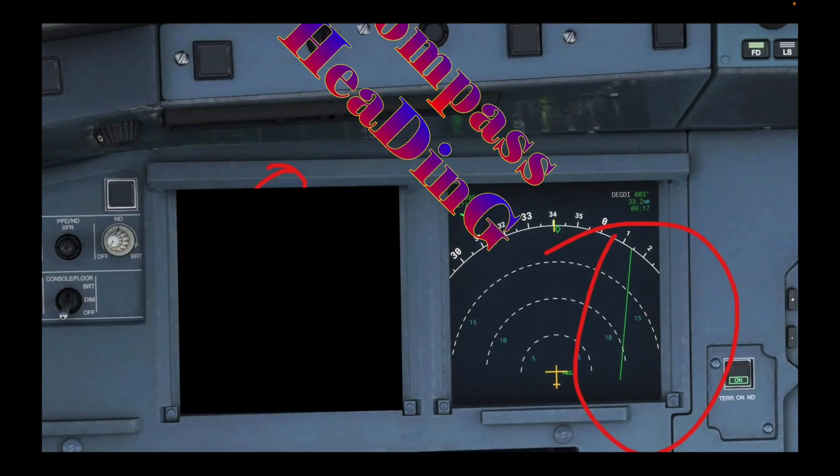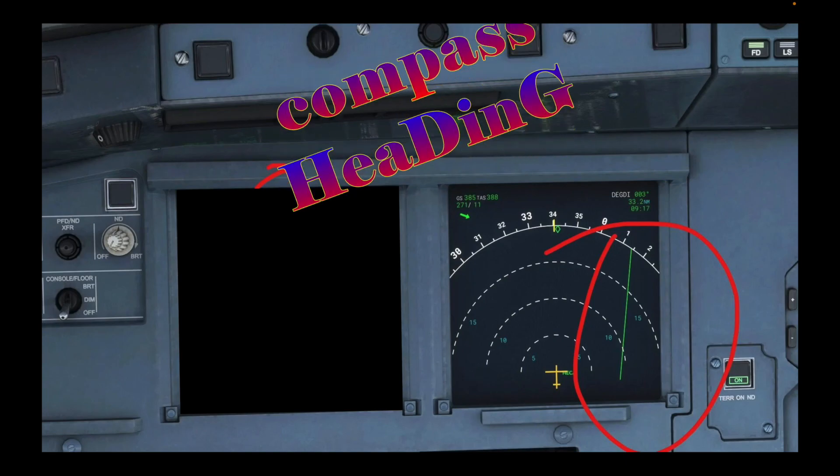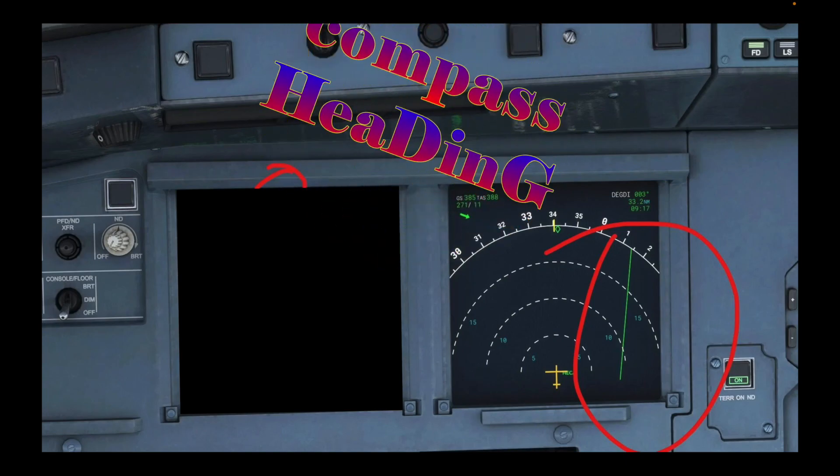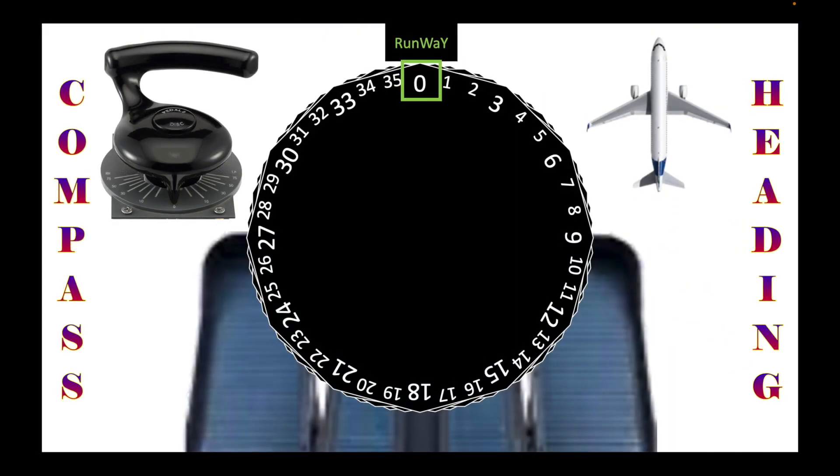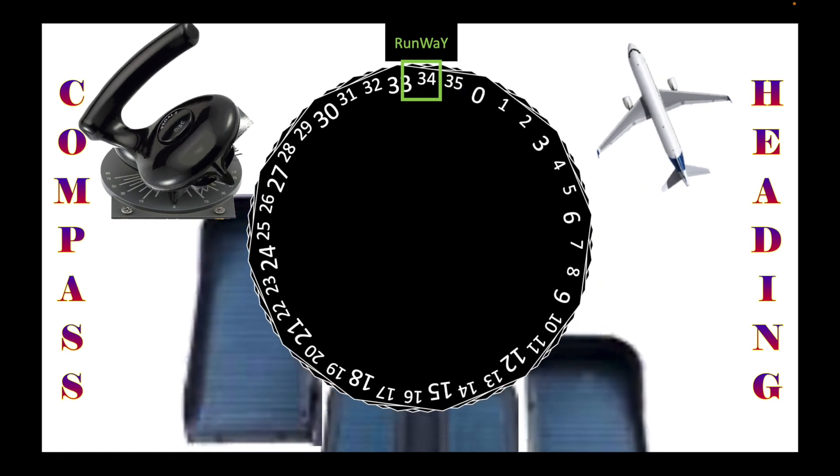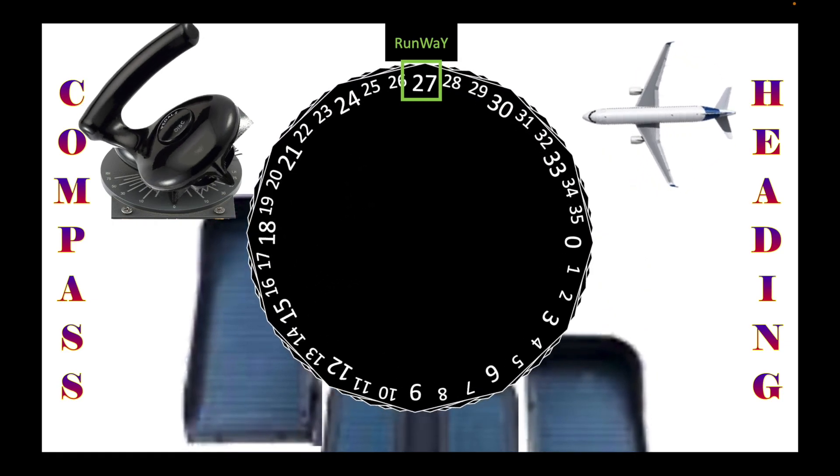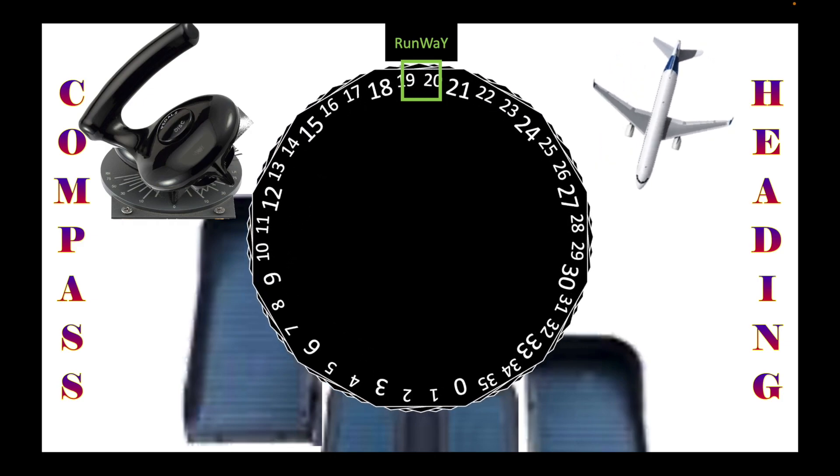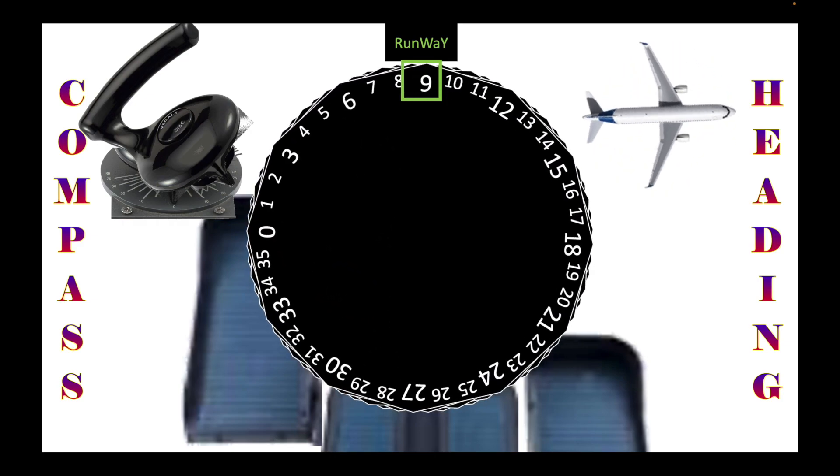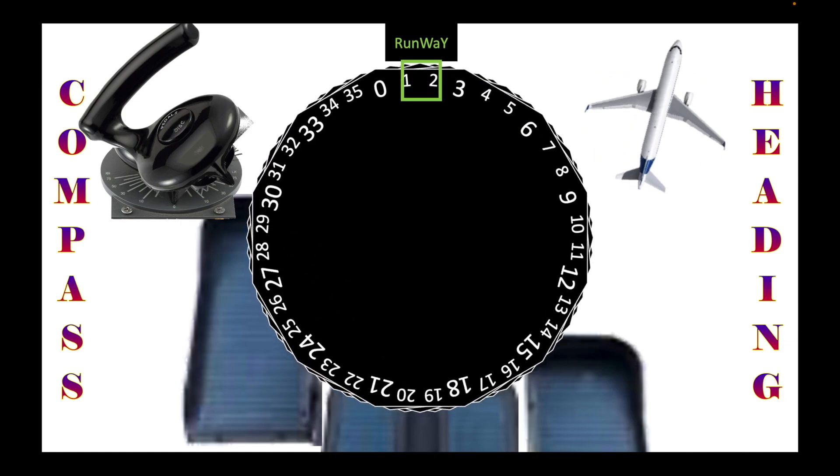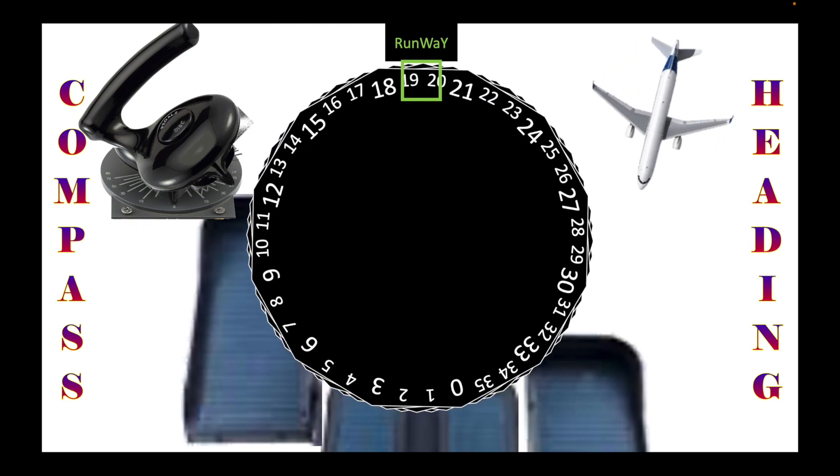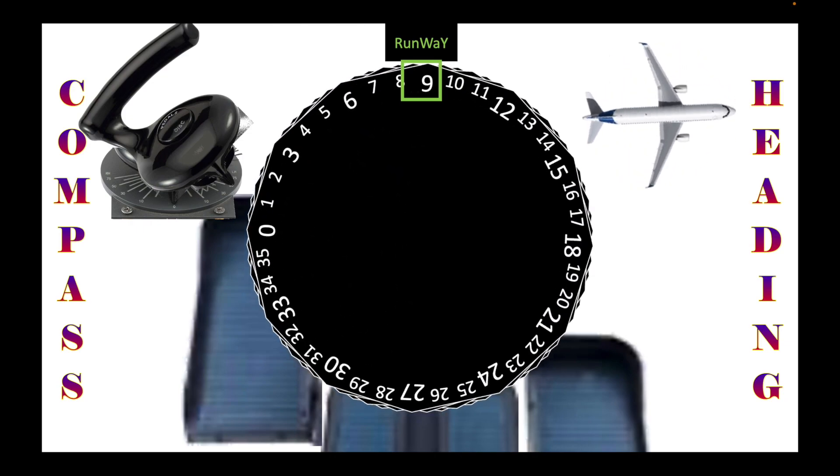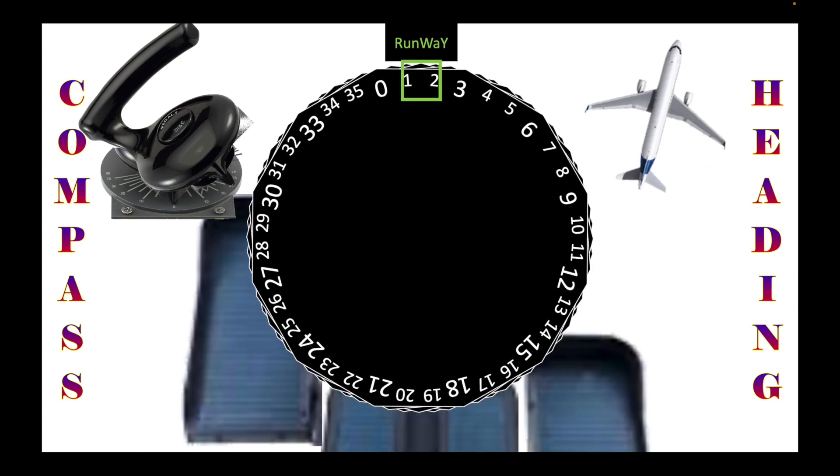The first instrument we will be discussing is the compass heading indicator. What direction am I headed? The heading indicator connected to a gyroscope shows the direction in which the airplane is flying. It is easier to use than a simple magnetic compass which is affected by the acceleration of the airplane.